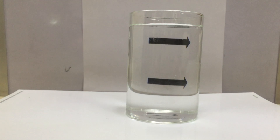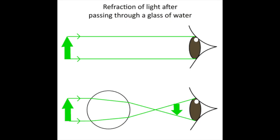In today's experiment, our glass of water behaves as a convex lens. When light enters the glass filled with water, it bends inside because of refraction. It again bends when it is leaving the glass of water. Eventually, the light paths cross each other and the image appears to be flipped horizontally.